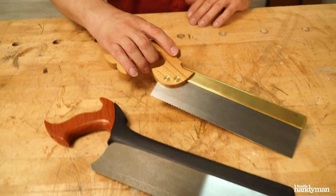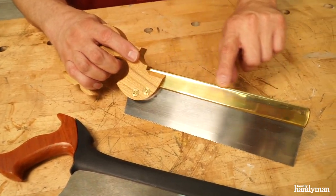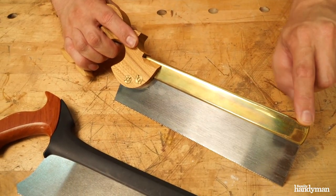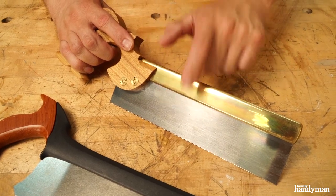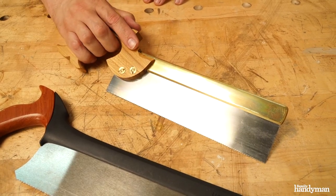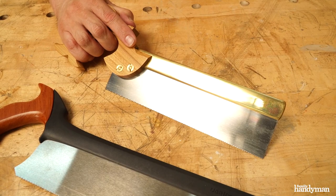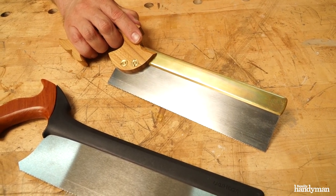These saws are called back saws because they are supported by a stiff material on the back, making the blade itself very stiff. The reason we're going to use these saws instead of a table saw or router table is that it's just so much more satisfying to do it by hand. We use these saws for cutting tenons for mortise and tenon joinery, or for dovetails.